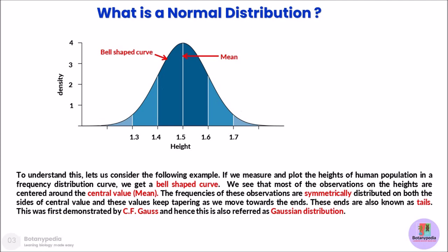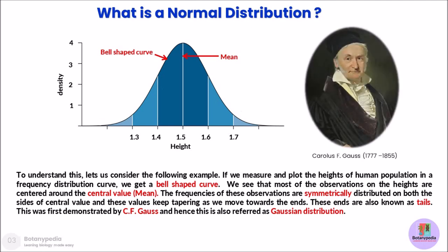What is the meaning of symmetrically distributed? It means that the left half of this bell-shaped curve is exactly a mirror image of the right half. And when we keep moving towards the ends of this bell-shaped curve, we see that the ends keep on tapering. These tapering ends are also known as tails. This kind of normal distribution curve was for the first time demonstrated by C.F. Gauss, and hence it is also referred to as Gaussian distribution.